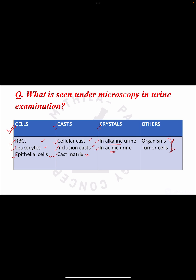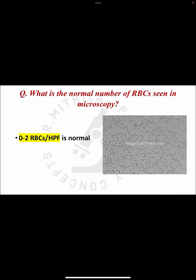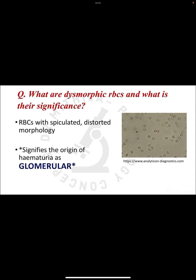For tumour cells, urine cytology is done for better morphology. The next question is: what is the normal range for RBCs in urine microscopy? Up to 2 RBCs per high power field is normal. If it is greater than or equal to 3 RBCs per high power field, then it is abnormal. This is a very important value to remember.